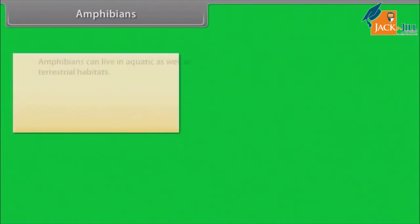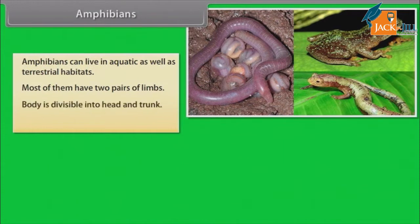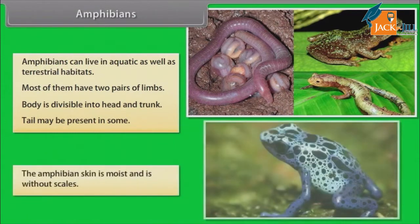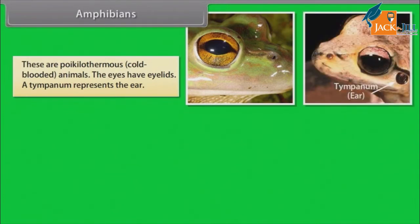Amphibians can live in aquatic as well as terrestrial habitats. Most of them have two pairs of limbs. The body is divisible into head and trunk. Tail may be present in some. The amphibian skin is moist and is without scales. These are poikilothermous, that is, cold-blooded animals. The eyes have eyelids. A tympanum represents the ear.